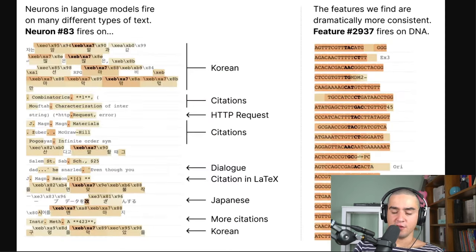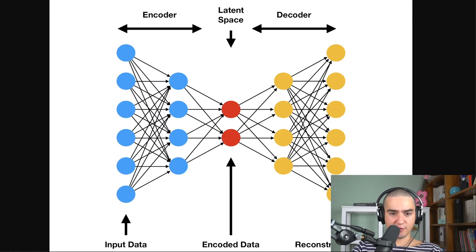To go back to the main points about monosemanticity versus polysemanticity, previously, they had something where if you look at some specific neuron in your MLP activation, it fires on like Korean, HTTP stuff, Latinx stuff, Spanish stuff. But now with all those like 4,000 features, it just fires on one specific thing, which is those DNA sequences, right? And this is much more interpretable. This is much better. This is much more interesting and much more useful for interpreting those larger models.